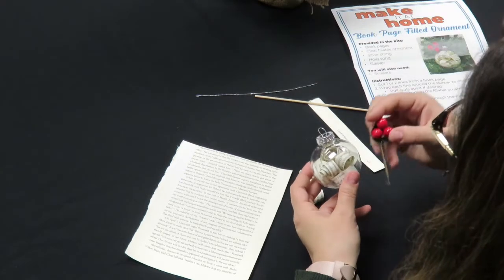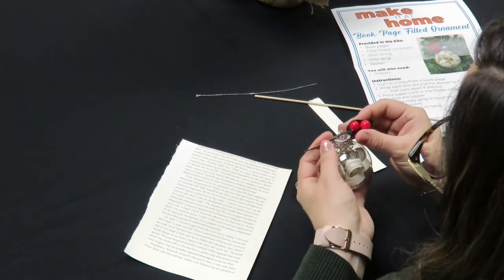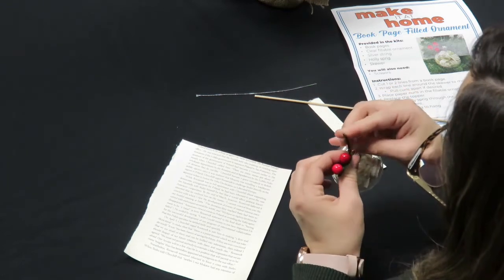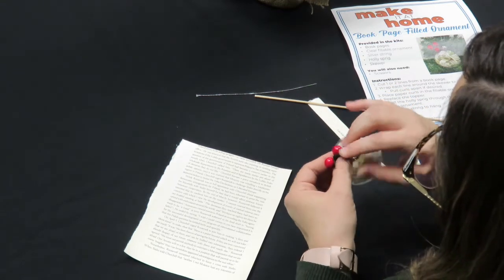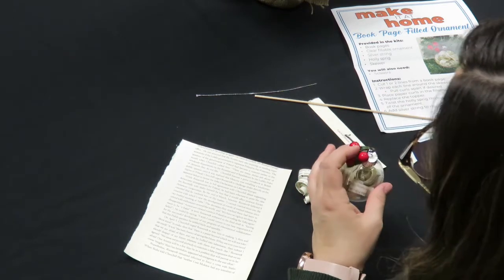Next, take your poly sprig, you're going to loop it through, and this has kind of like a bendy twist tie, so just wrap it around to hold it in place and cut off the extra.